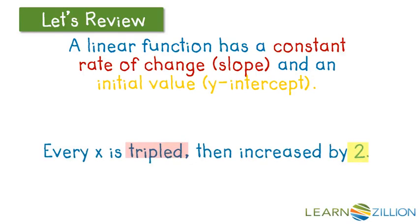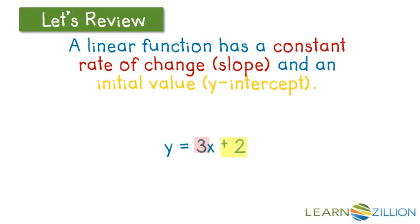For instance, if we say that every x is tripled, then increased by 2, 2 is our initial value, and tripled, or times 3, is going to be our constant rate of change. So y equals 3 times x plus 2.